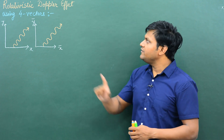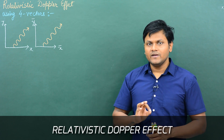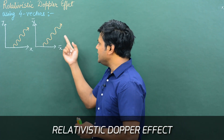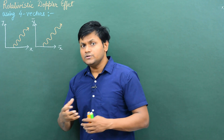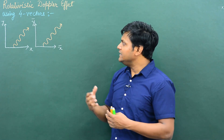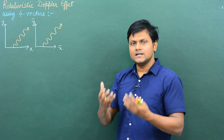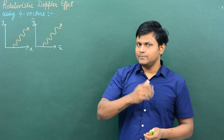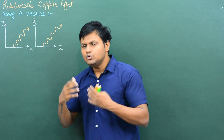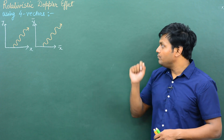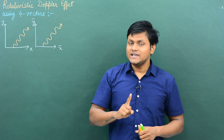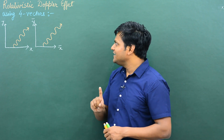You are probably already familiar with the relativistic Doppler effect. It is the apparent change in the frequency or wavelength of electromagnetic radiation emitted by a source due to the relative motion of an observer with respect to that source. It is called the relativistic Doppler effect because the apparent shift in frequency or wavelength arises as a result of relativistic phenomena such as time dilation — a moving observer will measure a different frequency due to time dilation effects. I have done a previous lecture on this using time dilation, but today I will obtain the same expression using four vectors.